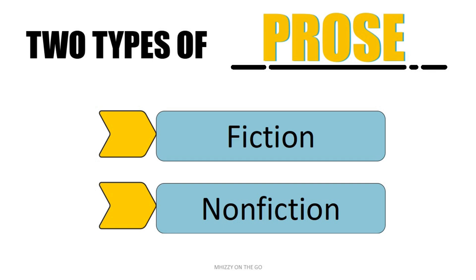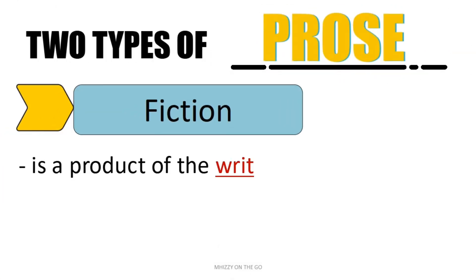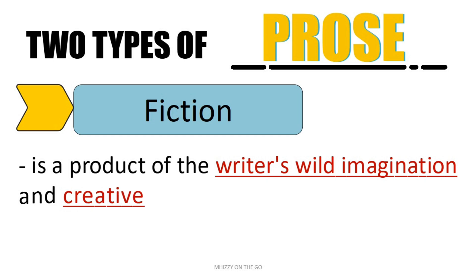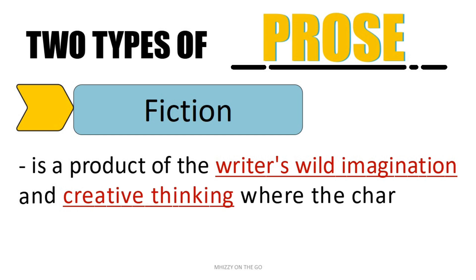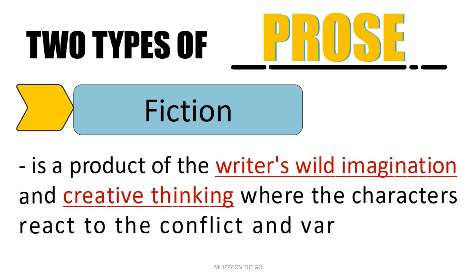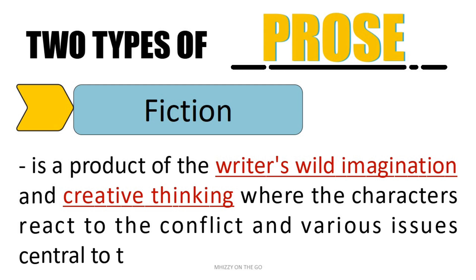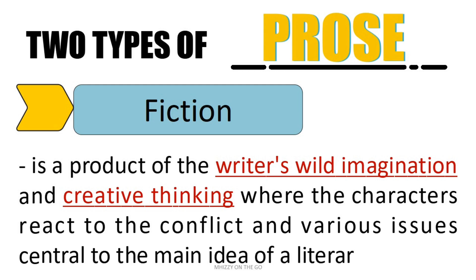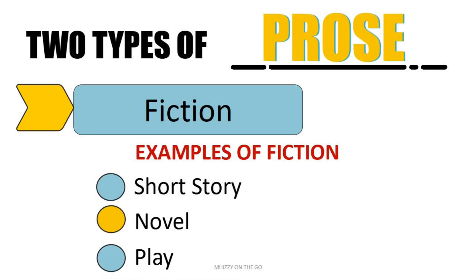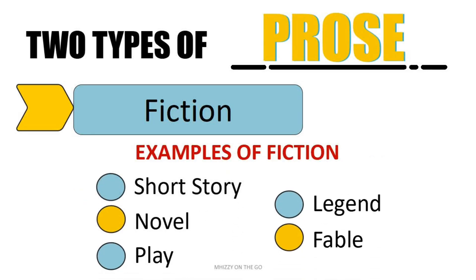The two types of prose are fiction and non-fiction. Fiction is a product of the writer's imagination and creative thinking, where characters react with a conflict and various issues central to the main idea of the literary work. Examples include short story, novel, play, legend, and fable.